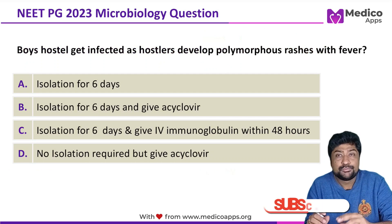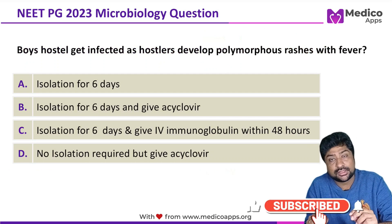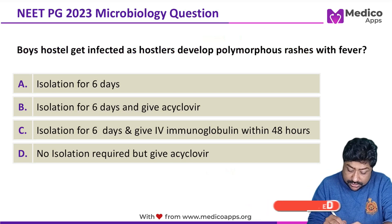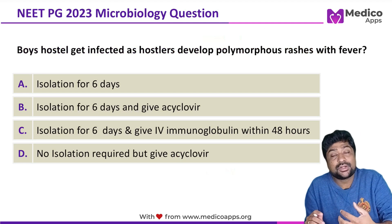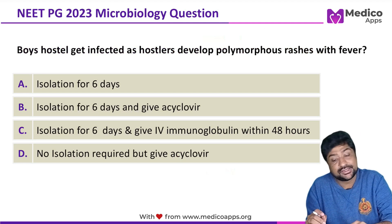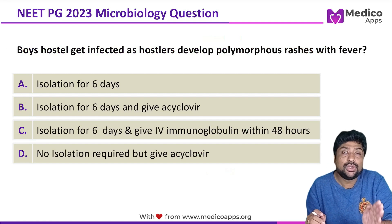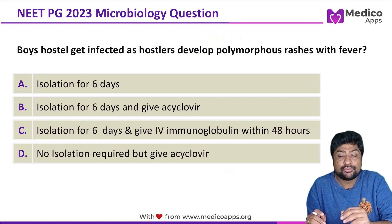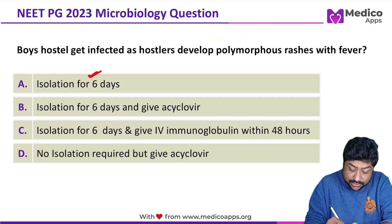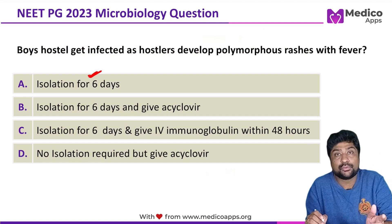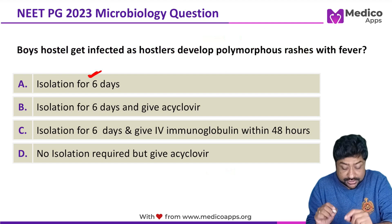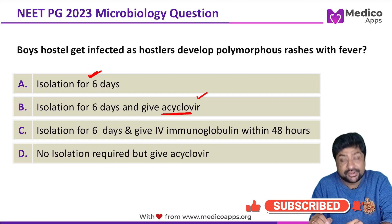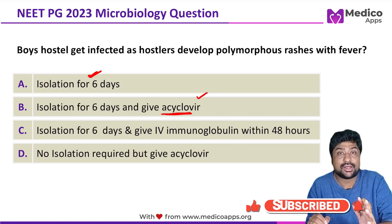In this case, not much detail is given, but from the answer options we can tell the examiner is talking about chickenpox. In chickenpox, the period of infectivity generally starts one to two days before the rash and can continue up to five to six days. So six days of isolation is part of the standard protocol for chickenpox.